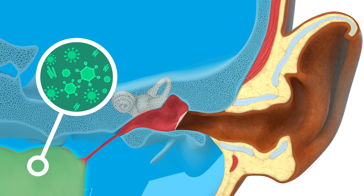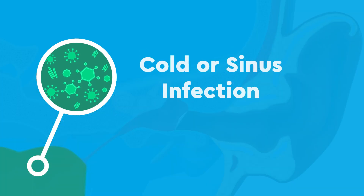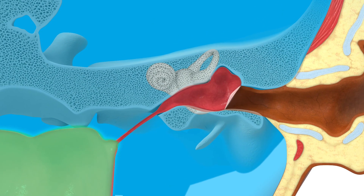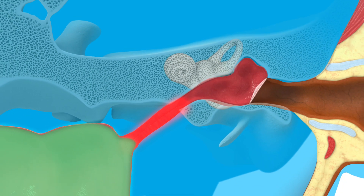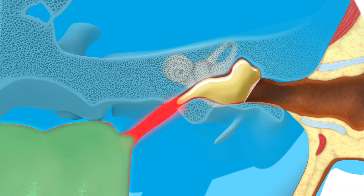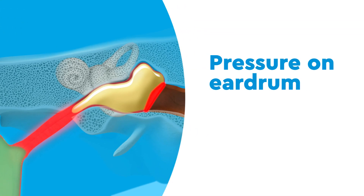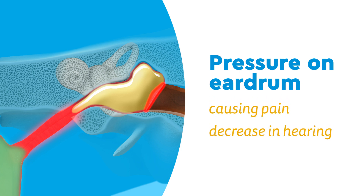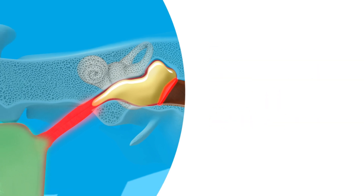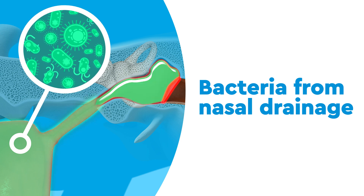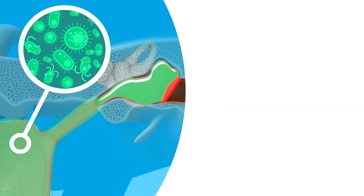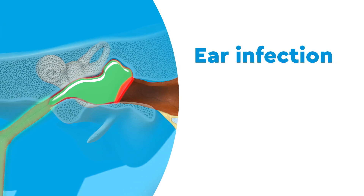But if your child gets an upper respiratory illness, such as a cold or sinus infection, the eustachian tubes can get swollen and have trouble working. Fluid can start to build up and put pressure on the eardrum, causing pain or even a decrease in hearing. This fluid can be infected by bacteria living in your child's nasal drainage. This is called an ear infection.